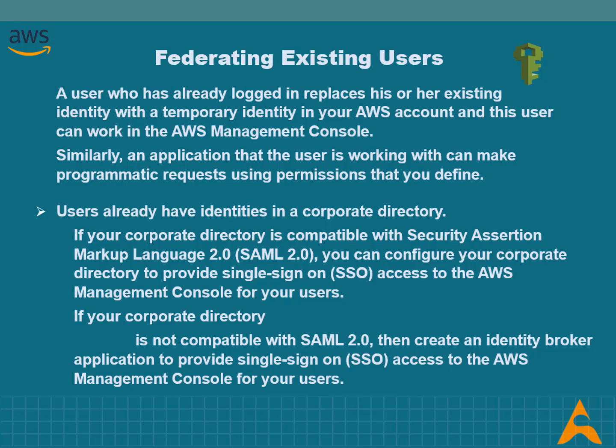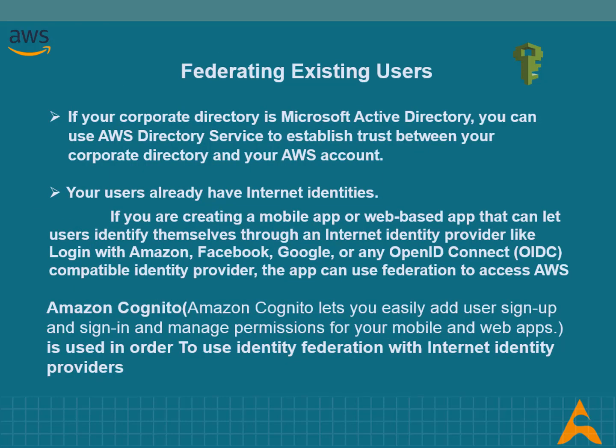Federation is particularly useful if your users already have identities in a corporate directory. If your corporate directory is compatible with Security Assertion Markup Language (SAML), you can configure it to provide single sign-on access to the AWS Management Console. If your directory is not compatible with SAML, you can create an identity broker application to provide single sign-on access. If your corporate directory is Microsoft Active Directory, you can use AWS Directory Service to establish trust between your corporate directory and AWS.